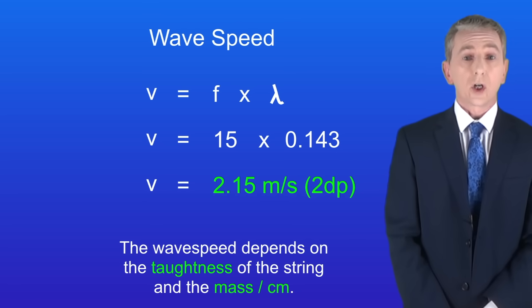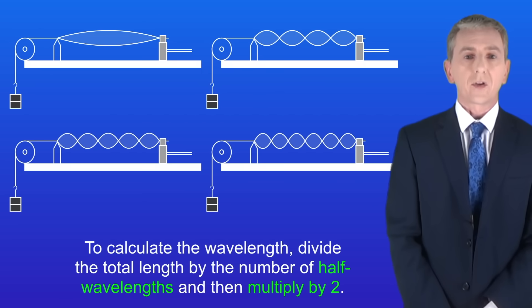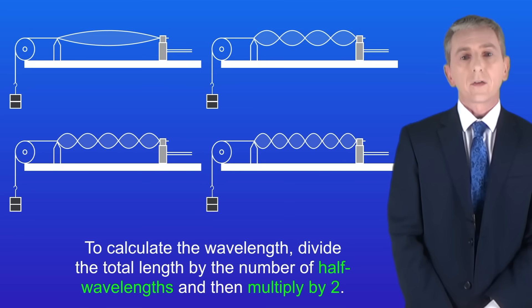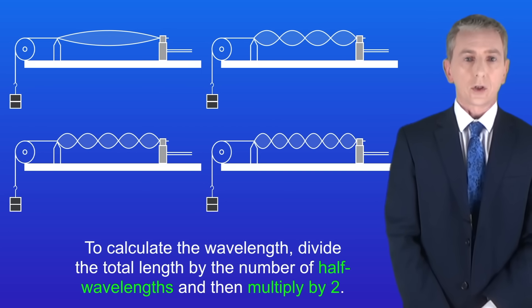Now in the exam you could be shown any standing wave and asked to calculate the wavelength. I'm showing you some examples here. So again to calculate the wavelength you need to divide the total length by the number of half wavelengths and then multiply by 2.